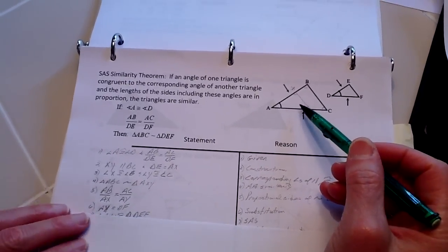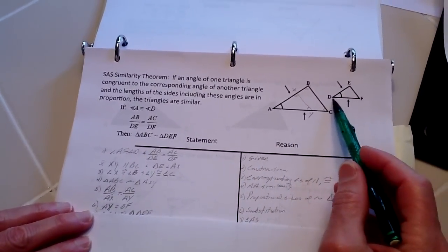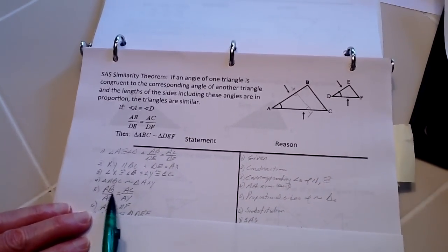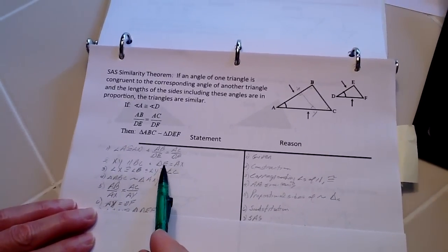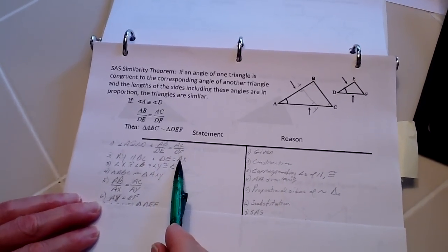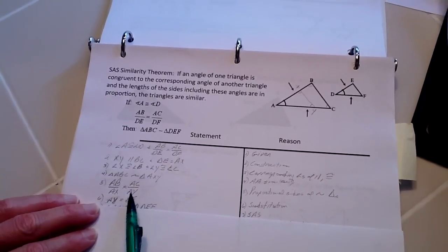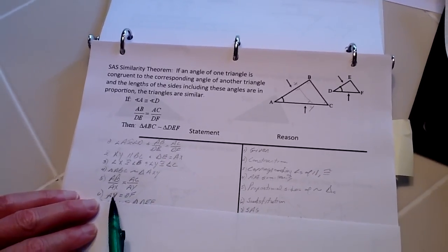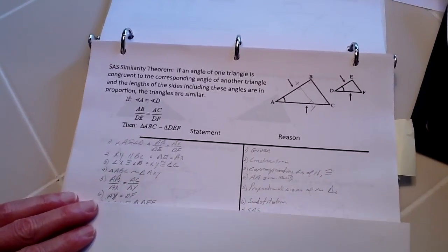Now I'm going to swap AY for DF. And we have DE over here, so I can put DE over here with AX and AC. Therefore, with that proportionality, by using substitution, these two have to be congruent or equal.